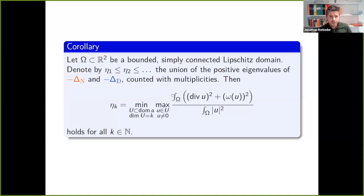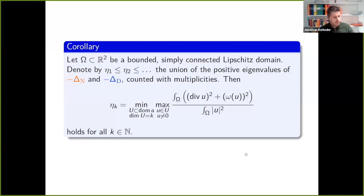This gives a min-max characterization: on a bounded simply connected Lipschitz domain Ω ⊂ R², the eigenvalues of A — denoted η_j — form a sequence containing all positive Neumann-Laplacian eigenvalues and all Dirichlet-Laplacian eigenvalues with multiplicities. The k-th eigenvalue of A is given by the standard min-max over k-dimensional subspaces of the form domain.